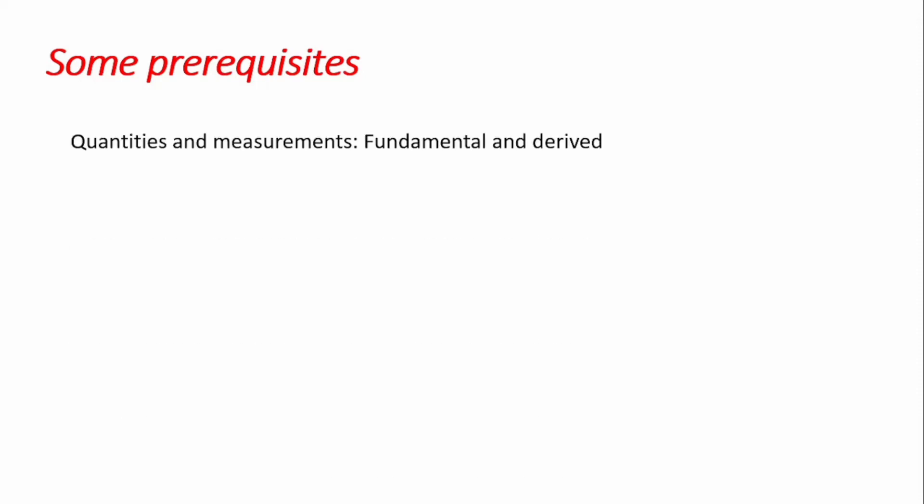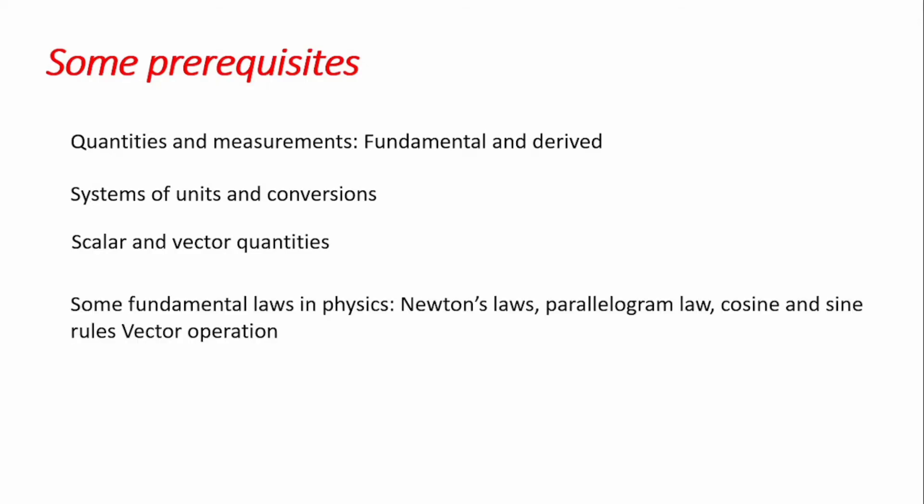Some things one ought to know before commencing studies in engineering mechanics: basic knowledge of different engineering quantities and their measurements — for example, fundamental quantities, derived quantities, their differences, examples, and units. One should be familiar with the different systems of units and their conversions, the difference between scalar and vector quantities, and some fundamental laws in physics such as Newton's laws, the parallelogram law, and the cosine and sine laws. These are some of the basic requirements needed for undertaking studies in statics.